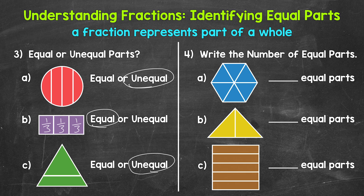Let's start with A. We have one, two, three, four, five, six equal parts. So six equal parts — this is what we call sixths. Each equal part is one-sixth of the whole.